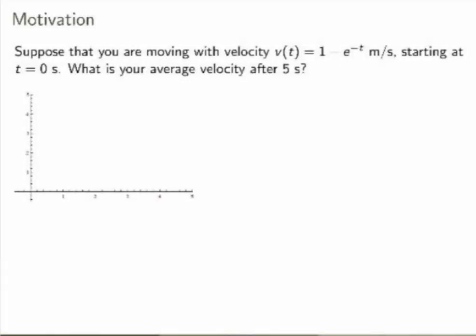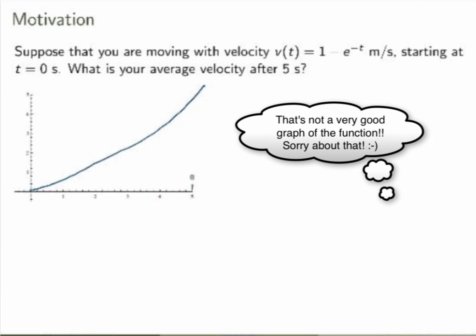Let me start with a motivational example. Suppose that you're moving with a certain velocity function, say v equals 1 minus e to the minus t, and you start at t equals 0. What is your average velocity after 5 seconds? If you sketch the graph of the velocity function, it will look something like this, and t equals 5 is here. I could certainly calculate the instantaneous velocity at t equals 5 by substituting t equals 5 into my expression.